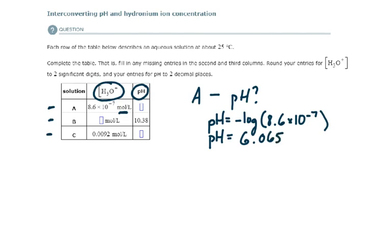They say to round all pH entries to two decimal places. For pH values, digits to the left of the decimal place are not considered significant — only digits to the right of the decimal are significant. This is due to log rules. So if we want two significant digits, we use two decimal places, and the pH for solution A should be reported as 6.07.